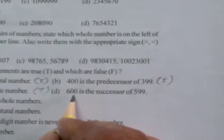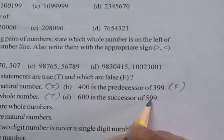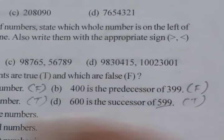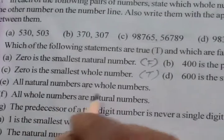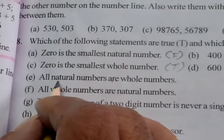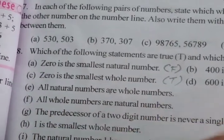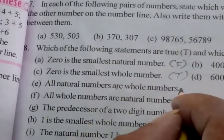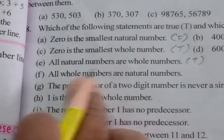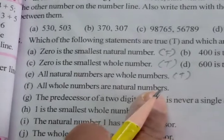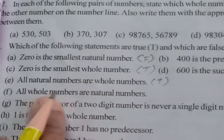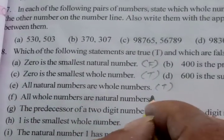Statement D: 600 is the successor of 599. After 599 comes 600, so this is true. Statement E: All natural numbers are whole numbers. Natural numbers start from 1, 2, 3 up to infinite, so all natural numbers are whole numbers — true. Statement F: All whole numbers are natural numbers. No, because the group of whole numbers includes 0, and 0 is not a natural number — so this is false.